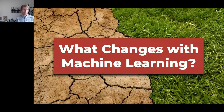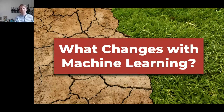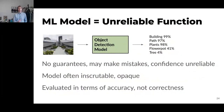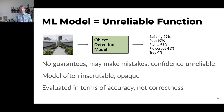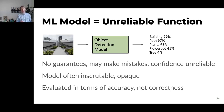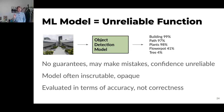There are certain things that change when we introduce machine learning into a software system. The key thing that changes everything downstream is that a machine learned model is essentially an unreliable function. From a software engineering sense it has a very simple interface — object detection takes an image and returns a list of objects — but we can't rely on this working correctly all the time. There are no guarantees. The model may make mistakes and we're usually okay with that to some degree. Confidence scores are usually unreliable.